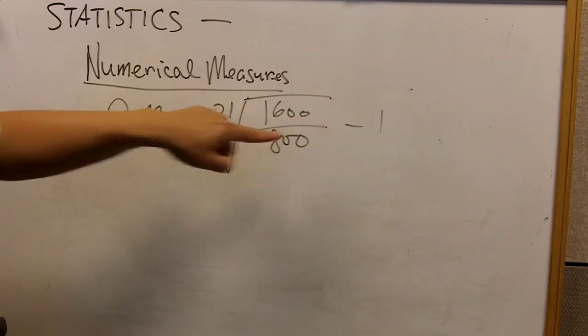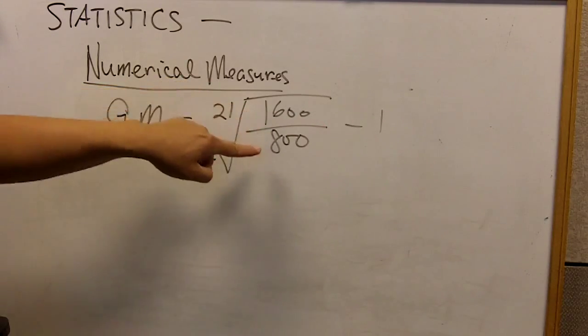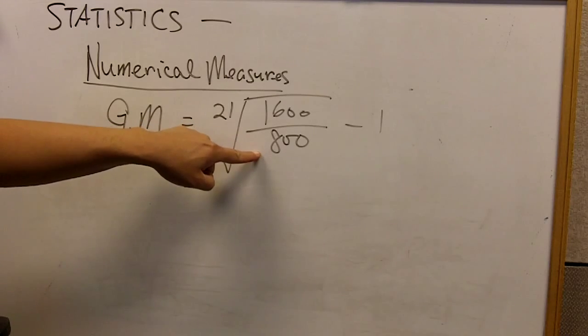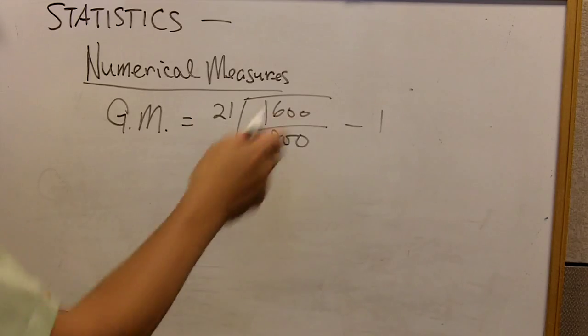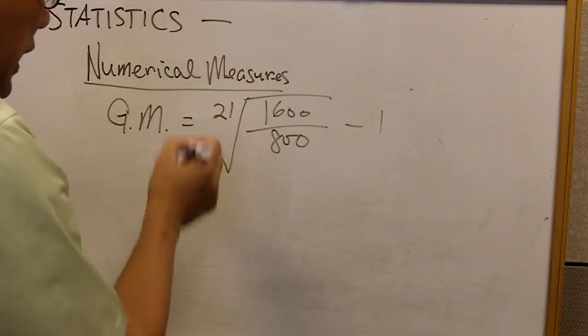And that is the ratio, the ending value divided by the beginning value. So in this case, you can easily see that is 2 and minus 1. So how do we take the nth root?